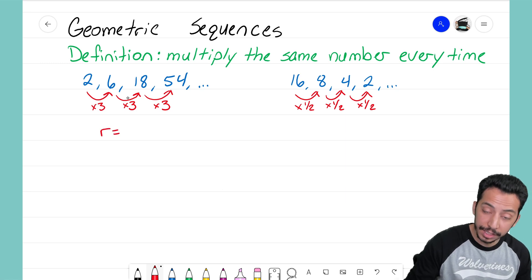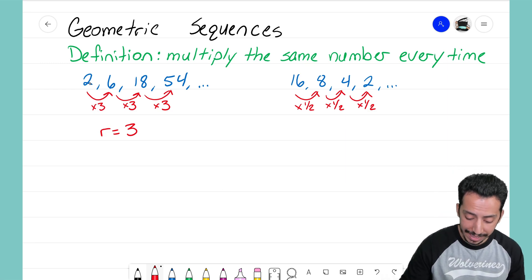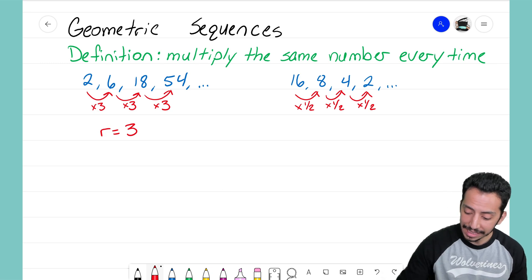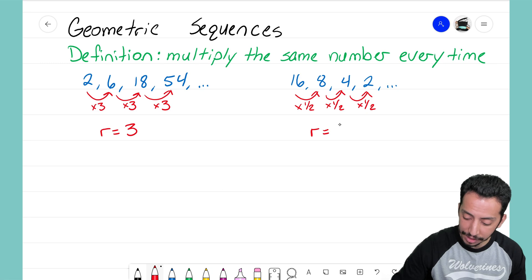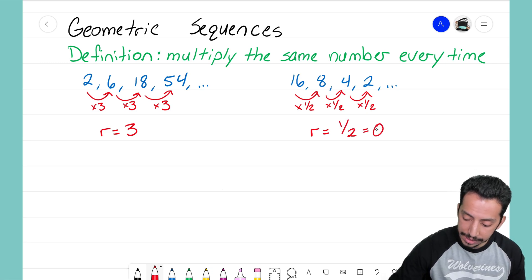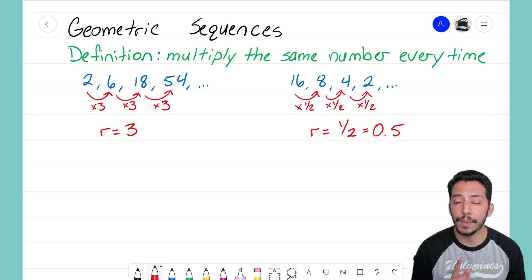I'm going to write it out one more time for this first sequence. In the previous video we found that r equals 3, the common ratio is 3 because that's the number we're multiplying each term by to get the next number. Same thing on the right - the common ratio was one half or 0.5. Both are acceptable.